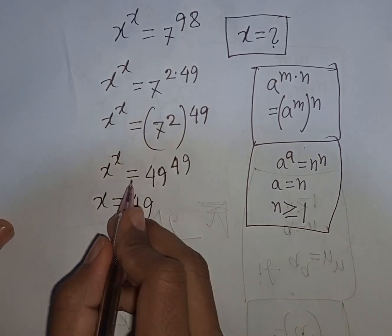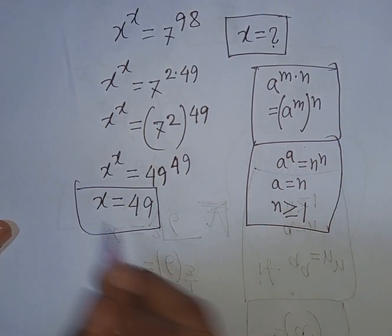So this rule applied here. So x will be equal to 49. So 49 is the value of x.